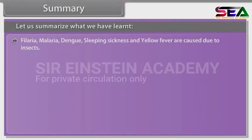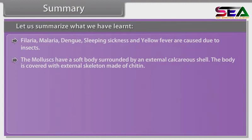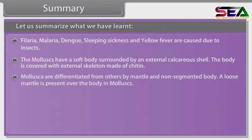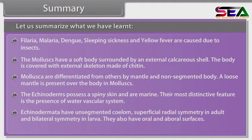Filariasis, malaria, dengue, sleeping sickness and yellow fever are caused by insects. Molluscs have a soft body surrounded by an external calcareous shell. Molluscs are differentiated from others by the mantle and non-segmented body. Echinoderms possess spiny skin and are marine; their most distinctive feature is the presence of a water vascular system. Echinodermata have superficial radial symmetry in adults and bilateral symmetry in larvae, and also have oral and aboral surfaces.